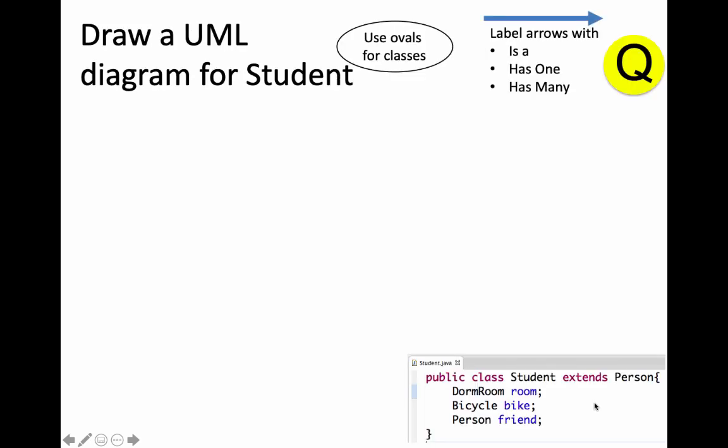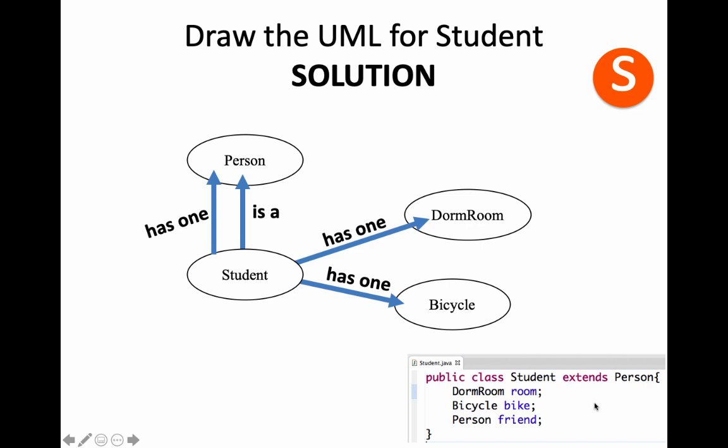I have code on the bottom right and I want you to try to draw the UML like we saw in the previous slide, labeling your arrows with 'is-a', 'has one', or 'has many'. Pause here and try it yourself. So: public class Student extends Person means Student is a Person. A Student has a DormRoom instance variable — has one DormRoom. They also have a Bicycle — has one Bicycle. And they have a single Person as their friend instance variable — has one Person. For a really big code base, this type of UML diagram to see the big picture could be super helpful.